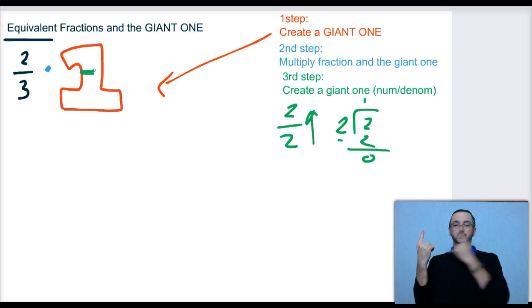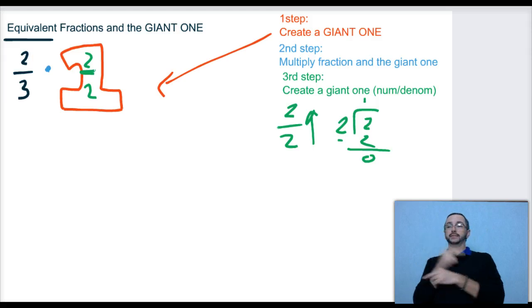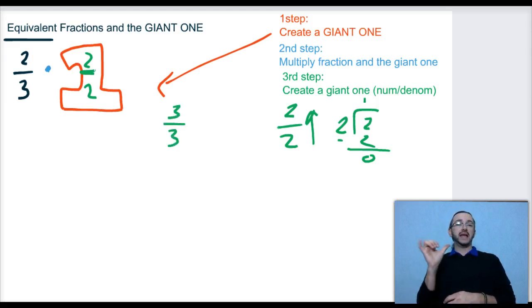Now, that's a giant one, you guys. If I put 2 and 2 here, that's the same as saying 1. Now, if I had 3/3, that would be a giant one.